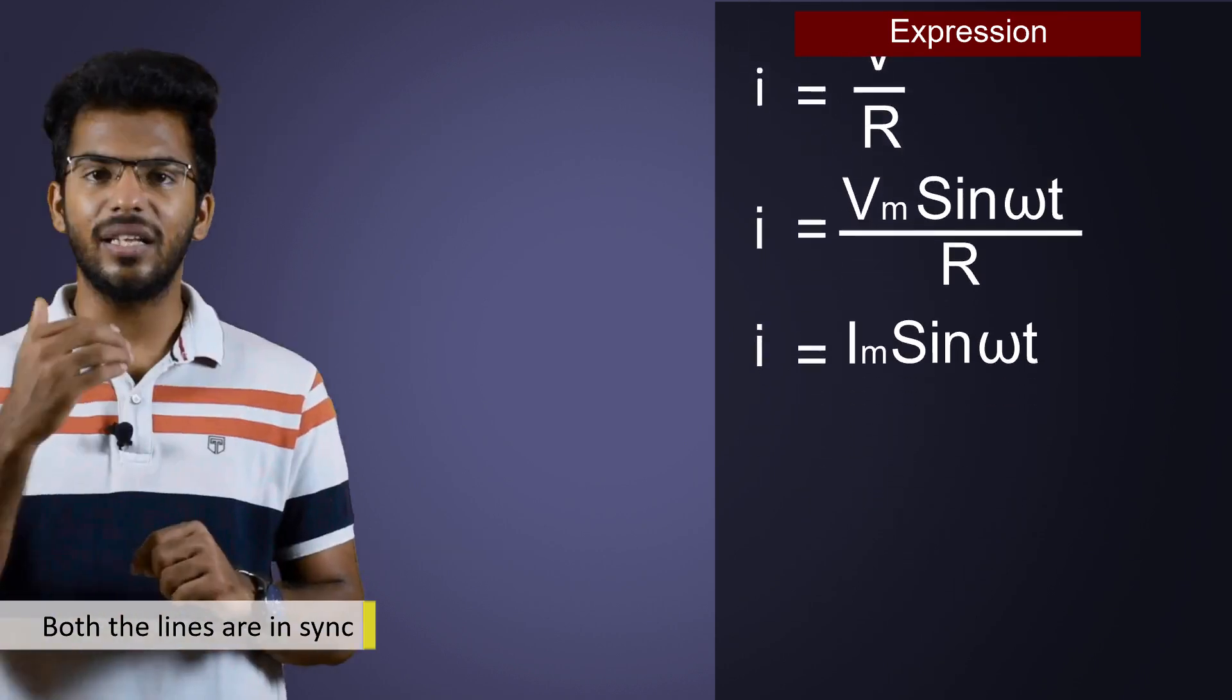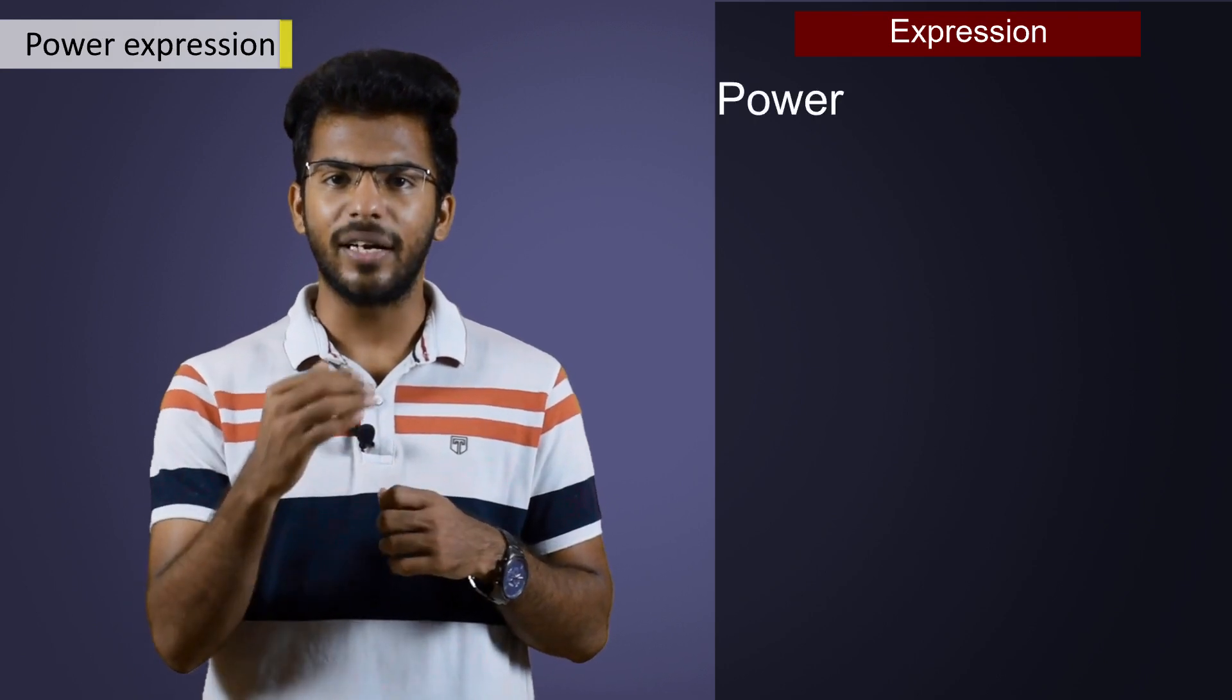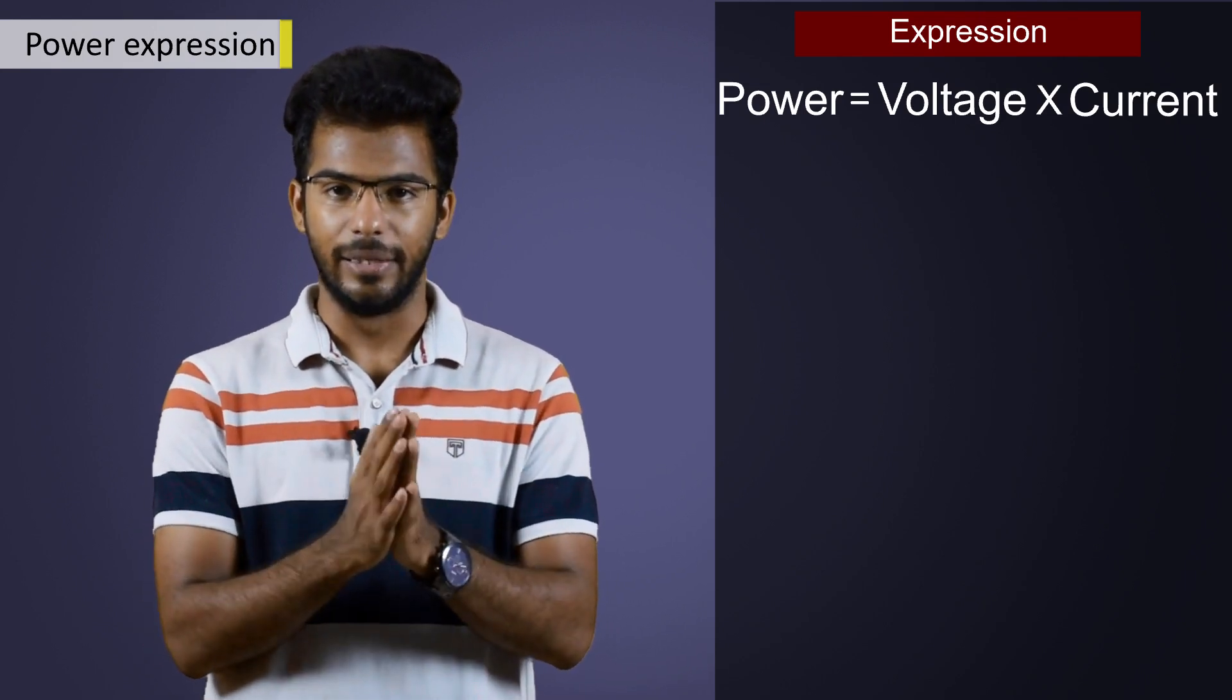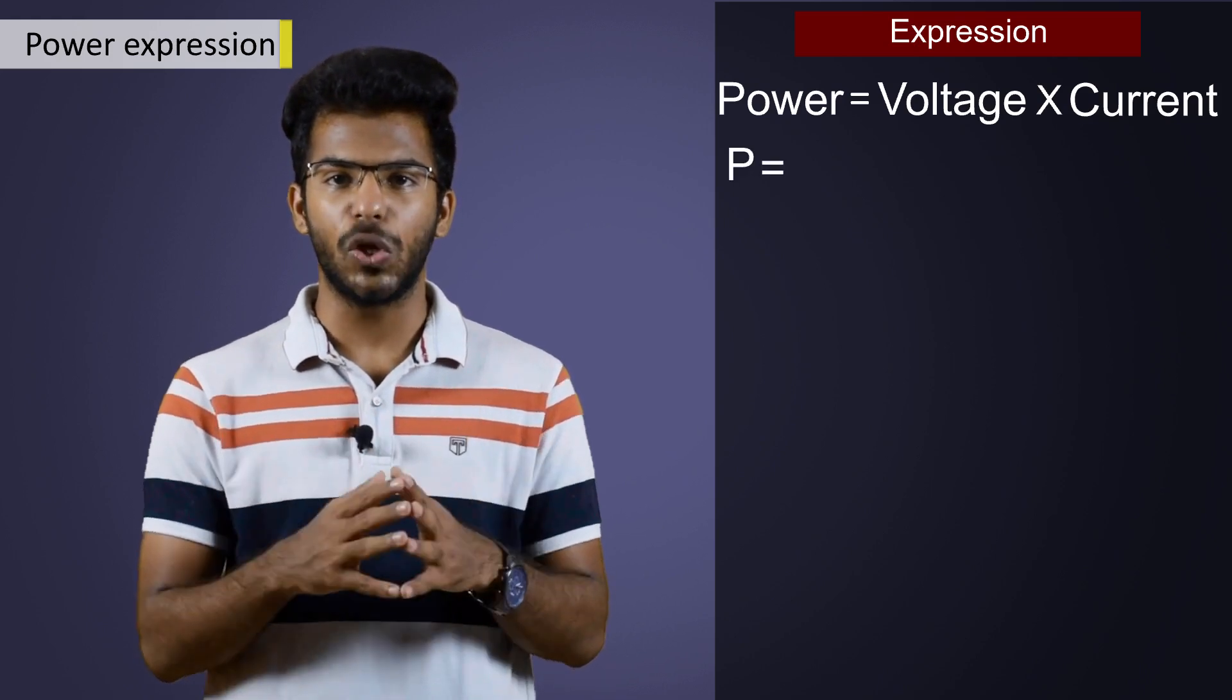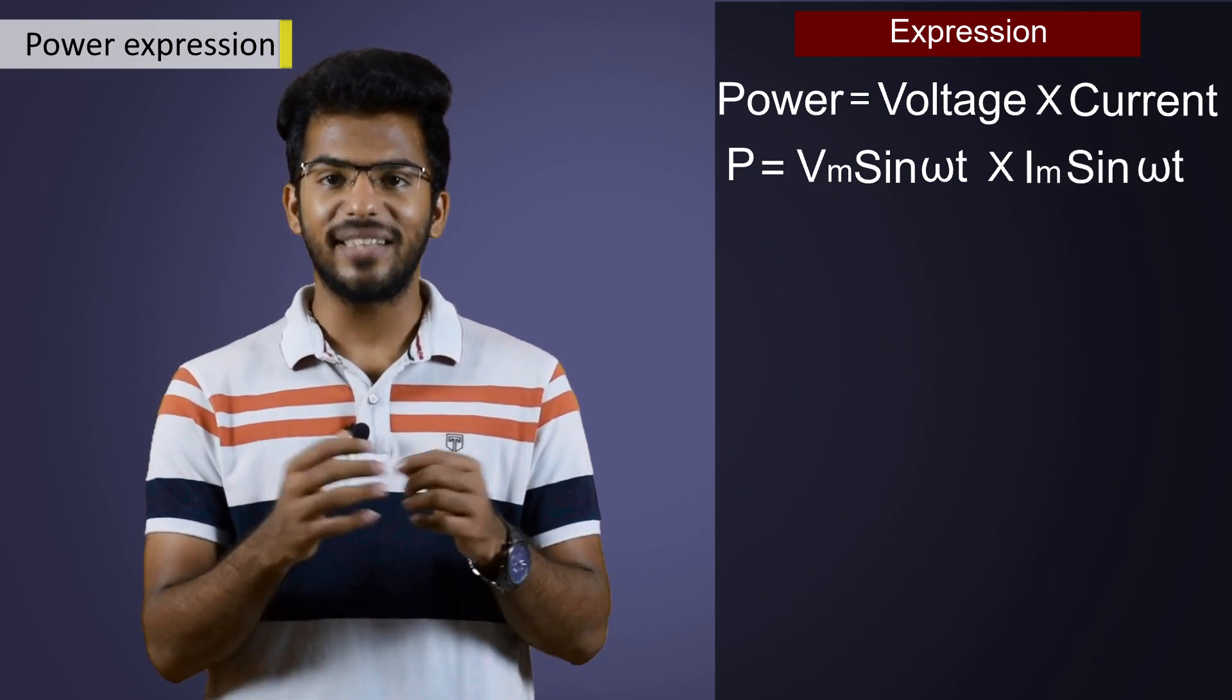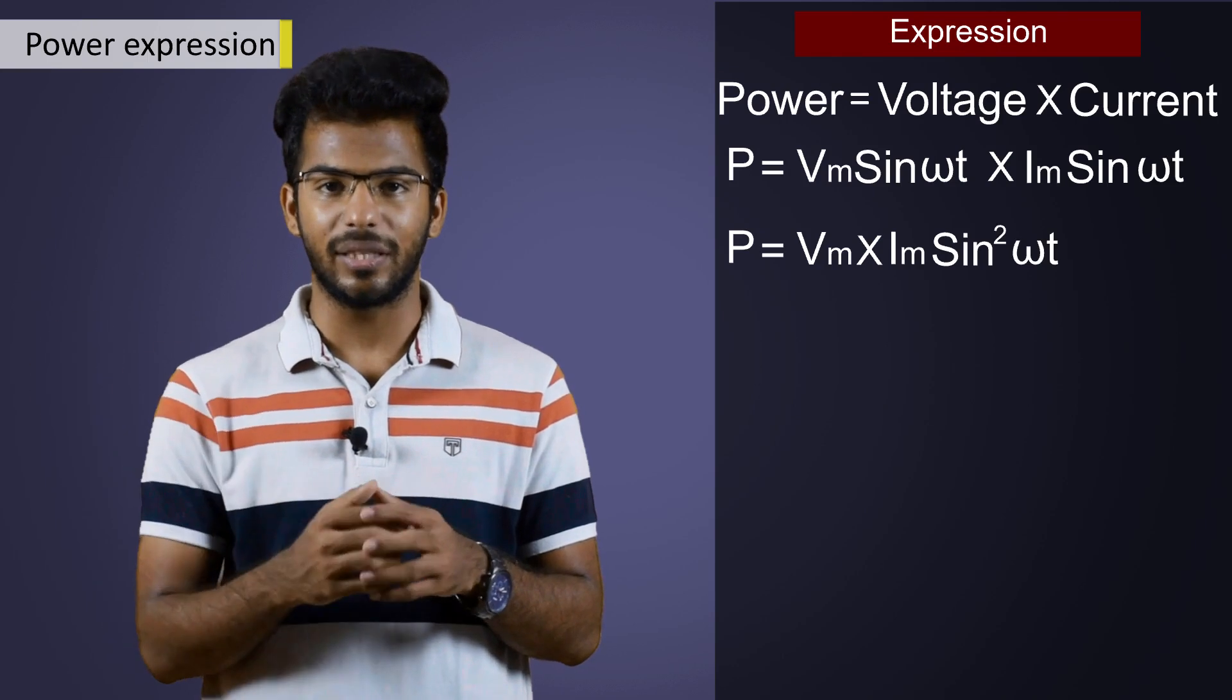Now, the last thing that we need to discuss here is the power expression and power curve. As we know, power is given as voltage into current and we have already derived the expressions for V and I. So, we can write power expression as P is equal to Vm sine omega t into Im sine omega t. By simplifying, we have P is equal to Vm into Im into sine square omega t.